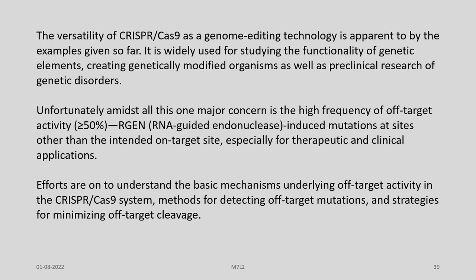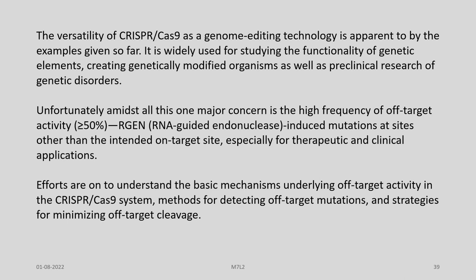The versatility of CRISPR-Cas9 as a genome editing technology is apparent from the various examples given so far. It is widely used for studying the functionality of genetic elements, creating genetically modified organisms, as well as pre-clinical research of genetic disorders. Unfortunately, amidst all these potential applications, one major concern is the high frequency of off-target activity — RNA-guided endonuclease-induced mutations at sites other than the intended on-target site — especially in therapeutic or clinical applications. Efforts are ongoing to understand the basic mechanisms underlying off-target activity in the CRISPR-Cas9 system.